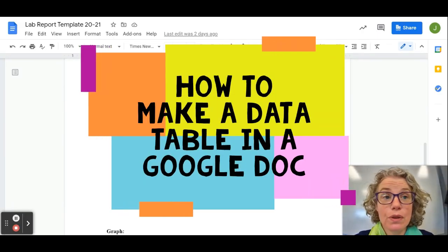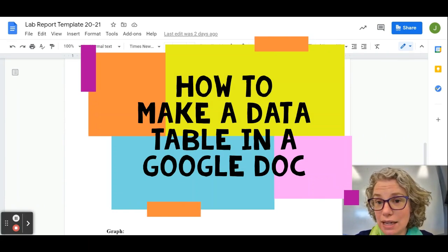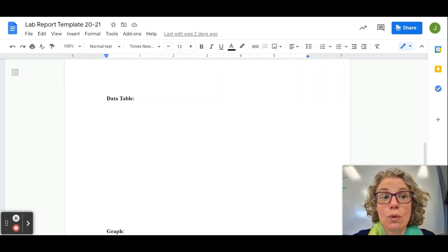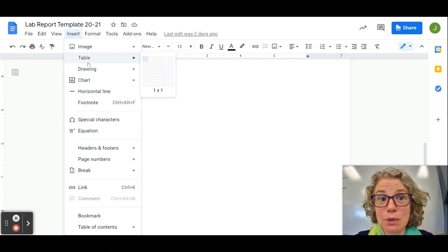I wanted to briefly go over with you how to make a data table within a Google Doc. Wherever you want to put your data table, you're going to go to Insert, then Table, and it's going to let you pick the number of boxes. It doesn't really matter at first how much you pick because you can always change it later.